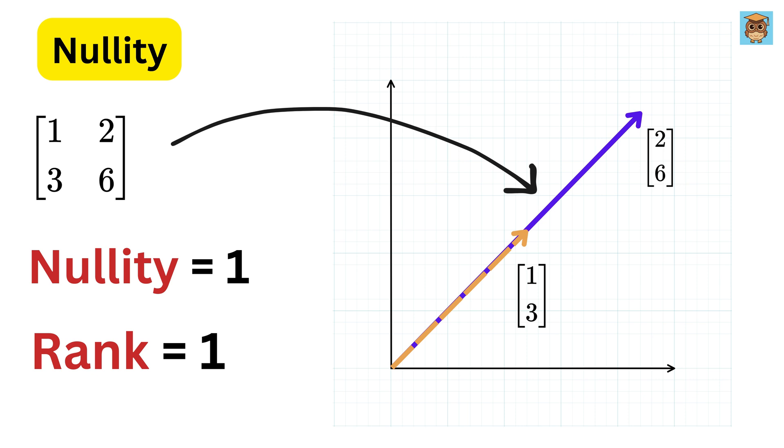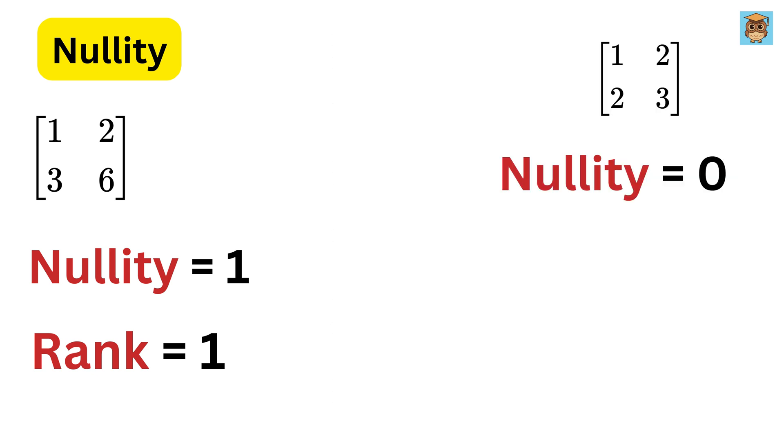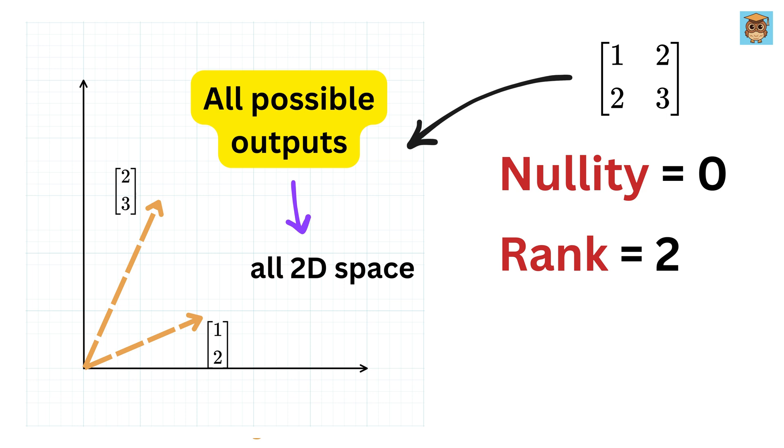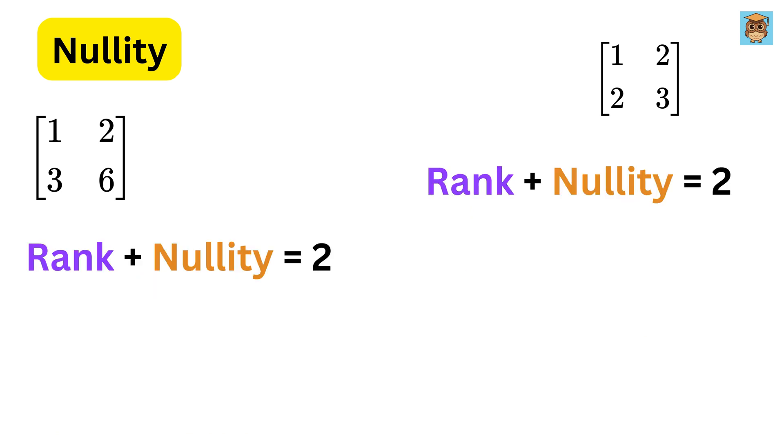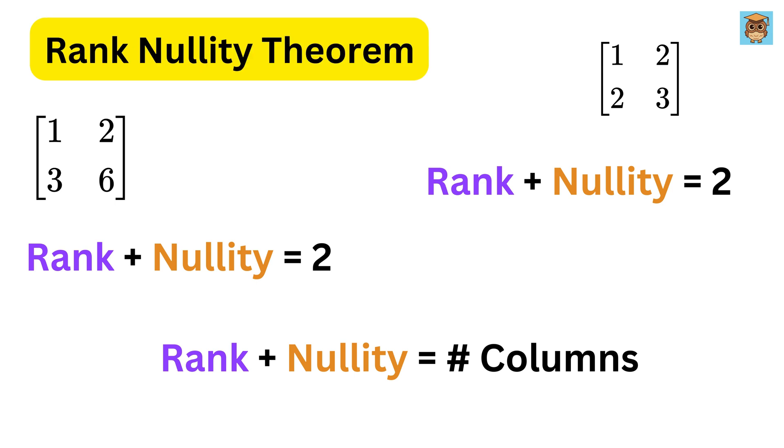Remember the rank of this matrix was 1? So, here's the cool part. If you add the rank and nullity for this matrix, you get 1 plus 1 or 2. Super cool! Now remember, the rank of this matrix was 2? So, if you add the rank and nullity for this case, you will get 2 plus 0, which is 2 as well. And thus, no matter the matrix, rank plus nullity always equals the number of columns of the matrix. This is called the rank-nullity theorem.